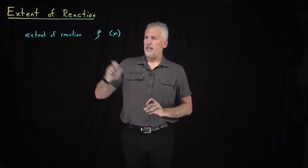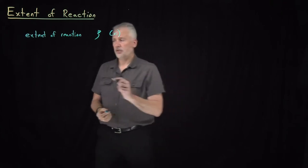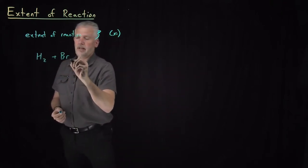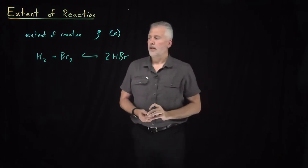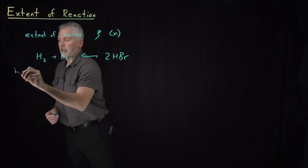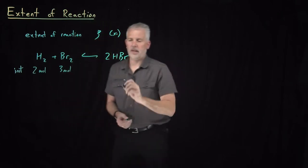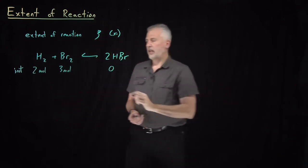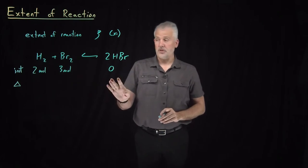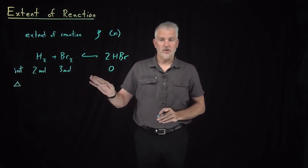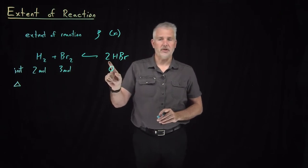To illustrate what the extent of reaction means, we'll use an example. It's the number of times that a reaction has proceeded. Using the example of H2 and Br2 reacting to form two molecules of HBr, suppose initially I have two moles of H2 and three moles of Br2, and no HBr initially. Every time I react one molecule of H2, I also consume one molecule of Br2 and produce exactly two molecules of HBr.